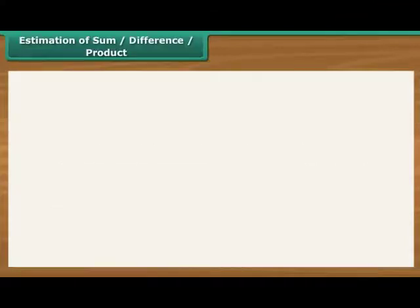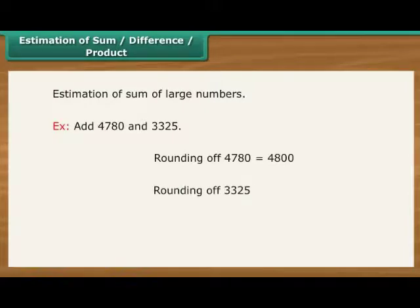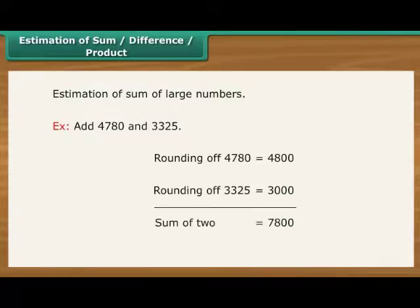Estimation of sum, difference, product. Estimation to nearest number can help in the estimation of the sum of two large numbers. For example, add 4,780 and 3,325. Rounding of 4,780 would make it 4,800. Rounding of 3,325 would make it 3,000. Sum of the two, 7,800.